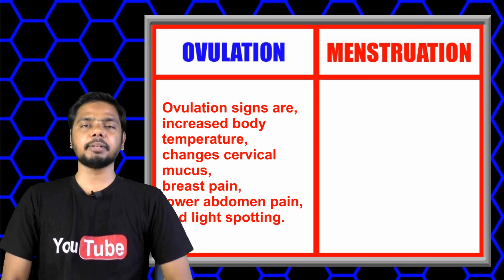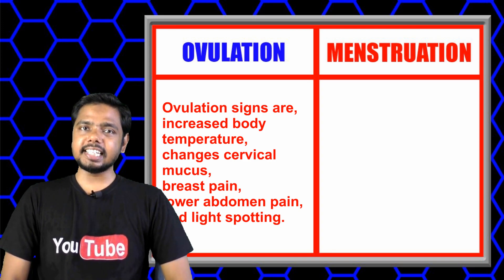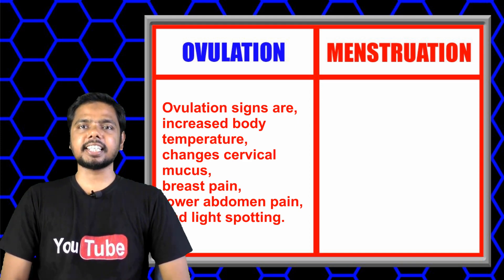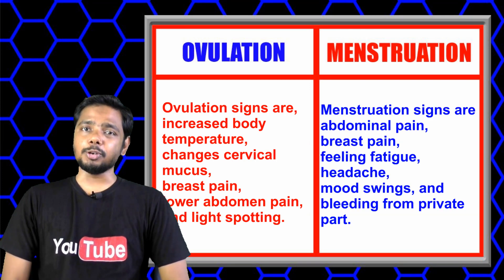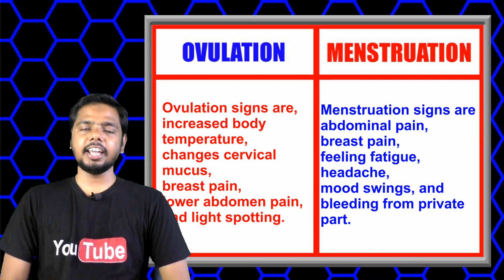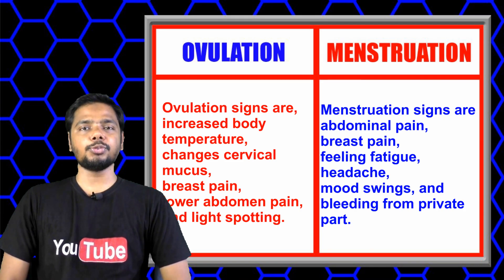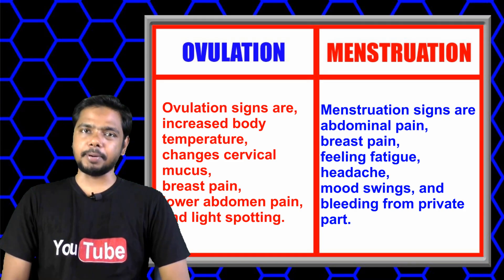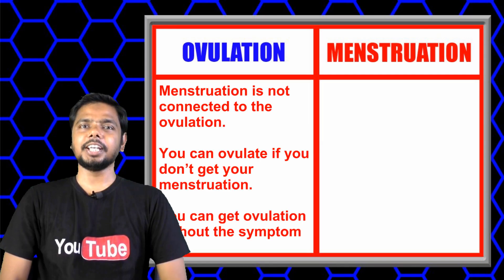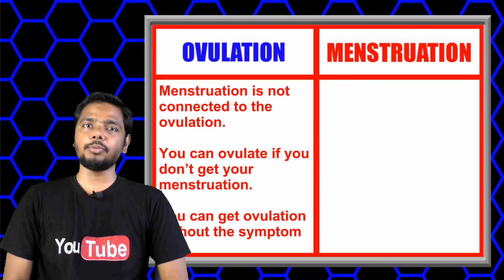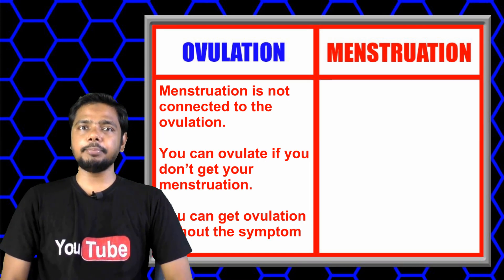Women experience a few common symptoms during ovulation and menstruation. The most common symptoms of ovulation are increased body temperature, changes in cervical mucus, breast pain, lower abdomen pain, and light spotting. The most common symptoms of menstruation are abdominal pain, breast pain, fatigue, headache, mood swings, and bleeding from the private part.